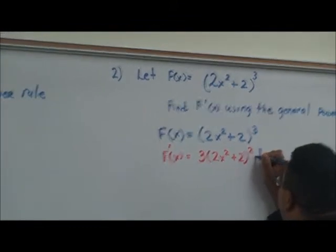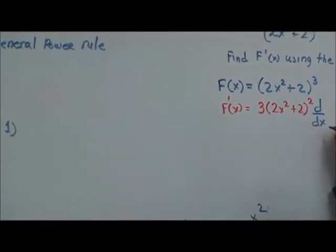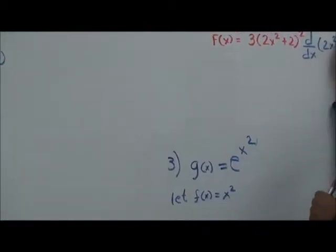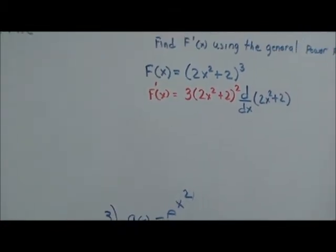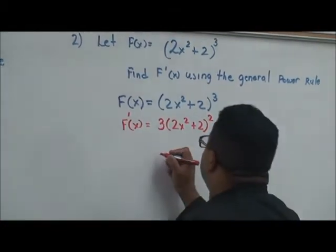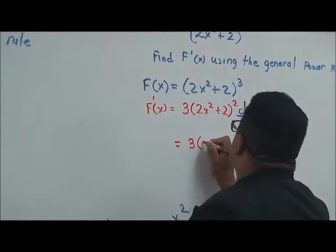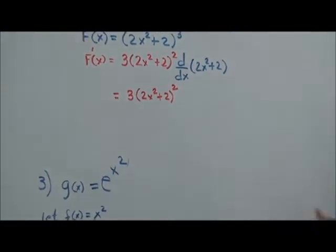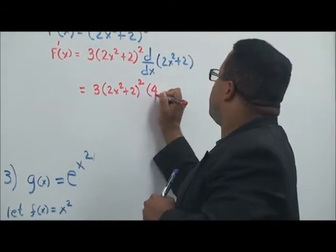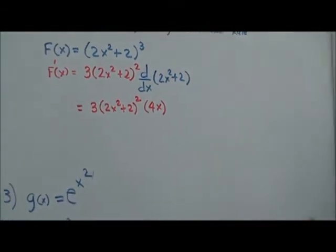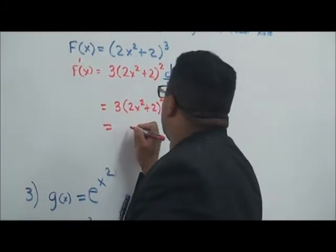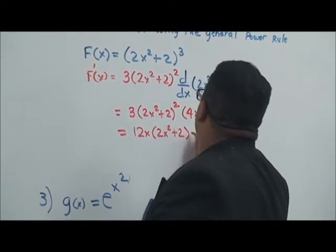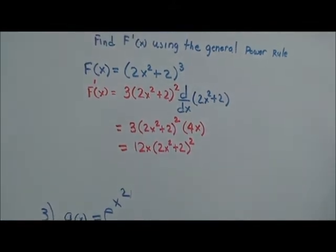Now we take the derivative of the inside function, 2x squared plus 2. The derivative of 2x squared is 4x, and the derivative of 2 is 0. So we multiply through: 3 times 4x times 2x squared plus 2 raised to the second power. This simplifies to 12x times 2x squared plus 2 raised to the second power. That is our solution for that problem.